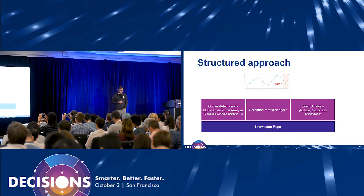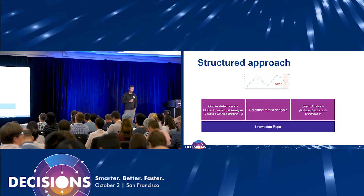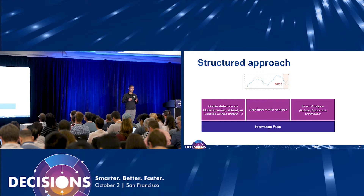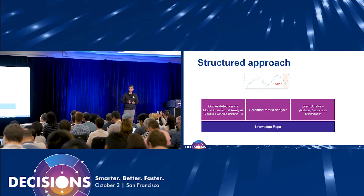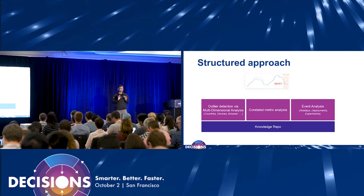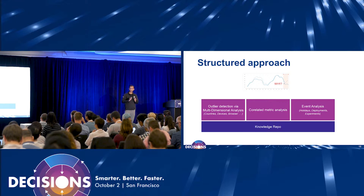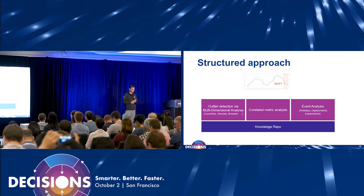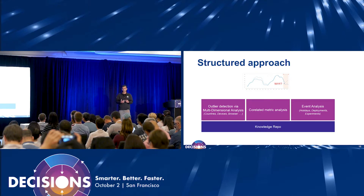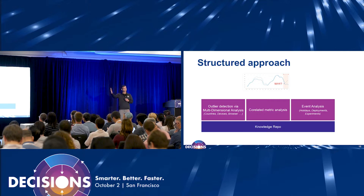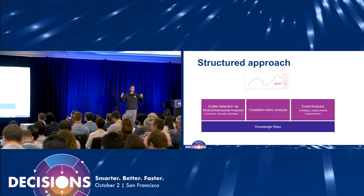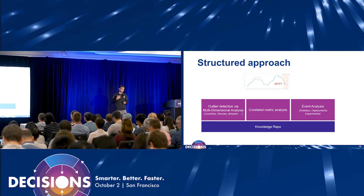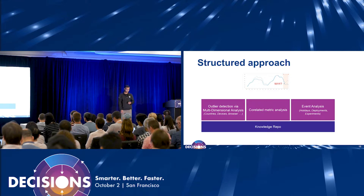We break it up into three different categories. The first is dimension analysis — the assumption is, let's first just look at the metric itself, and look at all dimension cuts related to that particular metric, such as countries and device, to see if we can isolate it to one particular dimension. The second part, when we can't resolve things with the first, is: is there some other metric that is actually impacting this metric? So we increase the scope of the search. The last part is where we have all these thousands of events and experiments, and we try to figure out which of these can explain the problem. We use the first two steps to narrow down to a certain set of events.